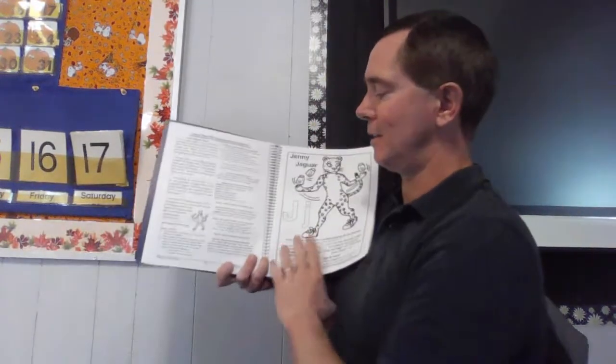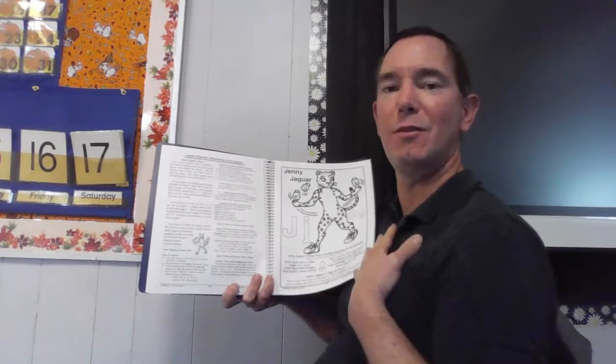J-j-j-j. Do you know how to juggle? Thumb up, yes? Thumb down, no. Show me your signal. I do. That's a text to self-connection.